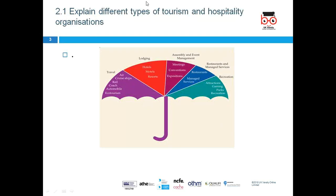Next, looking at 2.1 — explaining the different types of tourism and hospitality organizations. We'll go through a few organizations and discuss them in detail. Travel is a huge industry: airlines, rail, coach, and various other forms of transport are all involved. Lodging — hotels — also comes under this.